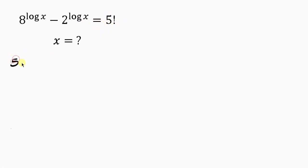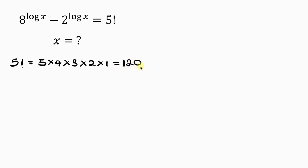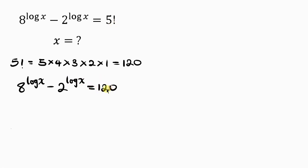One thing you should know is that 5 factorial is the same as 5 times 4 times 3 times 2 times 1, which equals 120. So we're going to be putting 120 in place of 5 factorial. Our expression now becomes 8 to the log x minus 2 to the log x equal to 120.